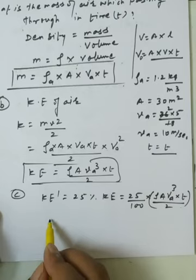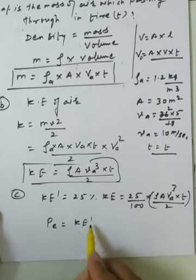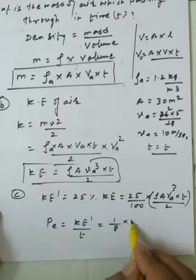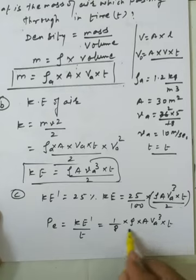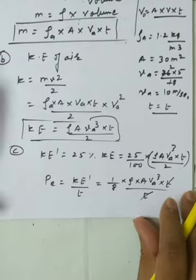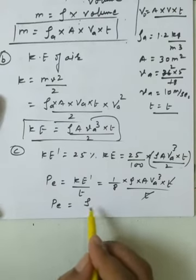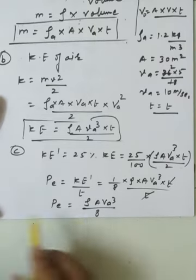Electrical power produced = converted kinetic energy per unit time. So P_electrical = (1/8)·ρ·A·V³·T / T = (1/8)·ρ·A·V³. All parameters are given, so we can compute the numerical value.